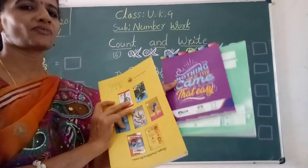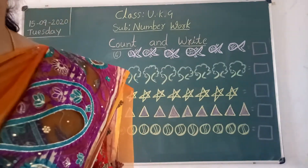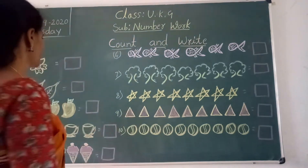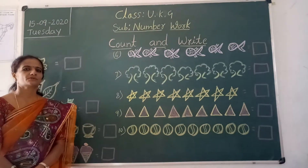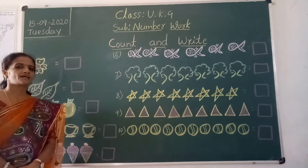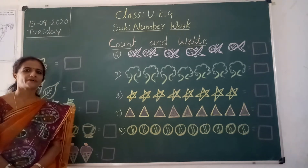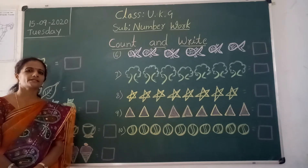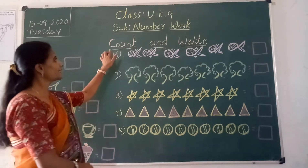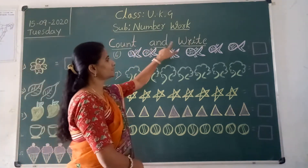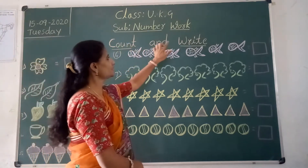Like this we have counted and written today. Take out your notebook. In the previous class I have done 11 to 20 number names — children who wrote already in the classwork. So next, we will count. You have to write the heading: Count and Write.